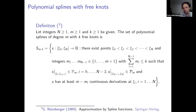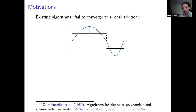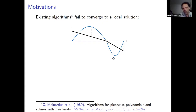Nürnberger came up with an interesting algorithm: relax the continuity requirement, solve the problem on each piece separately, fix the knot, then solve the convex problem. The problem is that this does not produce an optimal solution — it's not even a local solution. Even on a simple problem with only a single knot, this algorithm is not able to converge to a local solution, so it is not ideal.